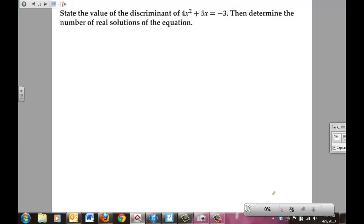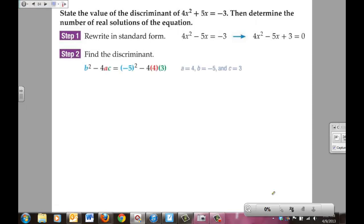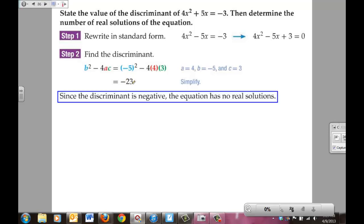To state the value of the discriminant of 4x² + 5x = -3, then determine the number of real solutions in the equation: We're going to rewrite it in standard form, 4x² + 5x + 3 = 0. From there we're going to find the discriminant. To do that, we're only going to focus on the part that's underneath the radical sign. The part underneath the radical in the quadratic formula is b² - 4ac. When we focus on that, plugging in our b, our a, and our c values, we end up getting a -23 for our discriminant. So how many real solutions do we get with a negative discriminant? Zero. Since it's a negative discriminant, there are no real solutions.